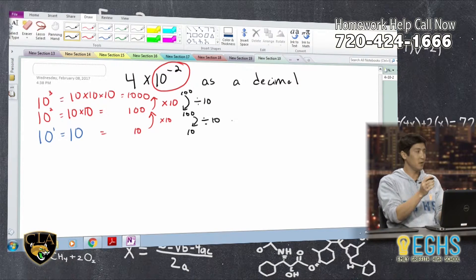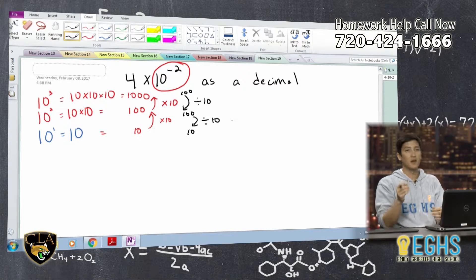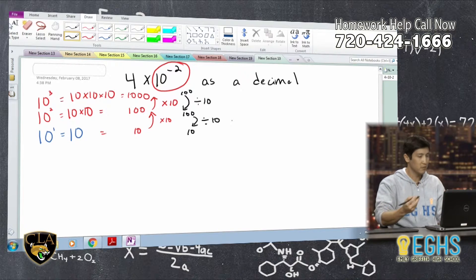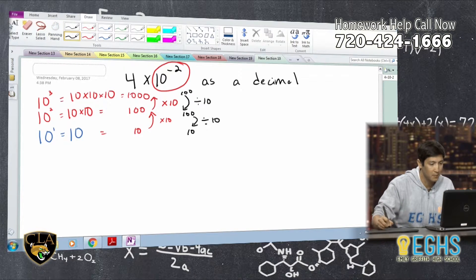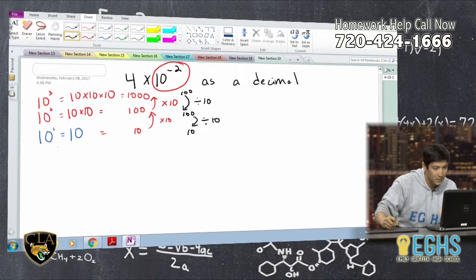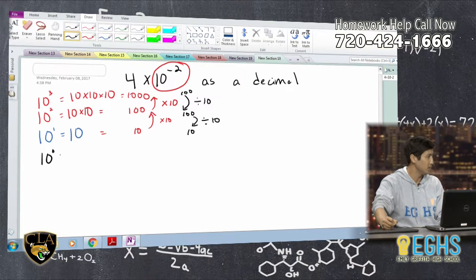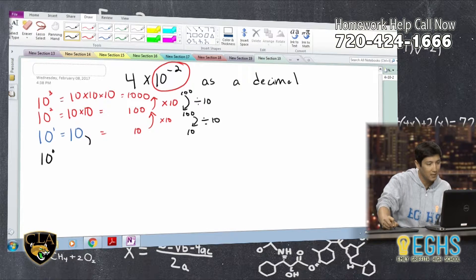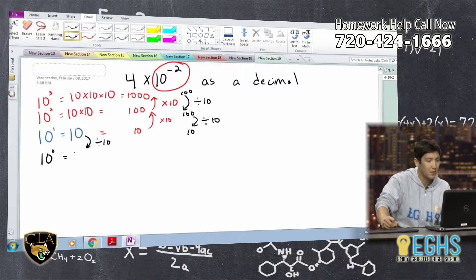And the important thing in math, right, is we always have these repeated patterns and rules that will keep on working over and over again. So we have to be able to keep on applying that. So if I went down to 10 to the power of zero, and this is one that throws everybody off, right? We're really taking this and we're dividing it by 10. And we're going to get 10 divided by 10, which is 1.